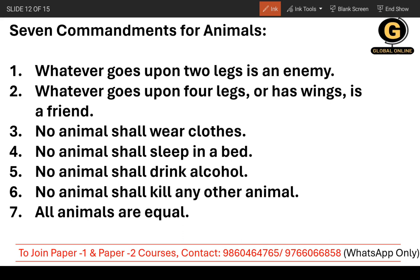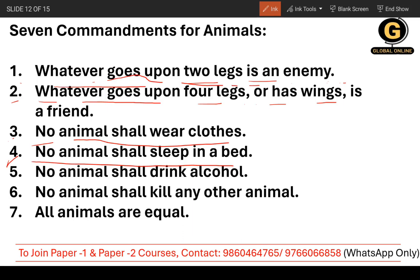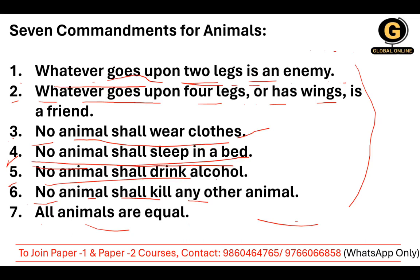There were seven commandments of Animalism. First: whatever goes upon two legs is an enemy. Second: whatever goes upon four legs or has wings is a friend. Third: no animal shall wear clothes. Fourth: no animal shall sleep in a bed. Fifth: no animal shall drink alcohol. Sixth: no animal shall kill any other animal. Seventh: all animals are equal. But things change — you will get to know.